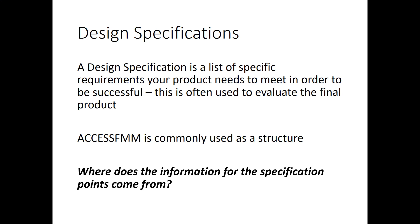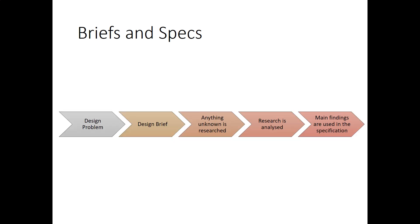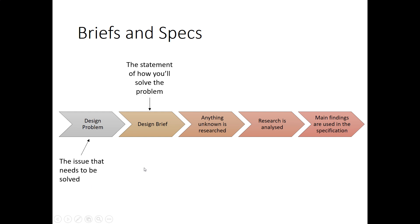Where does the information for specification points come from? This is essentially a timeline of how briefs and specs work. Stage one is a problem — an issue that needs to be solved. Stage two is the design brief, which is the statement of how you're going to solve that design problem. Then you start your research — anything unknown is researched, such as what materials are available and what needs the client has.